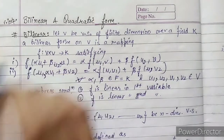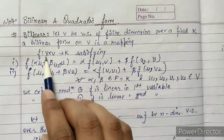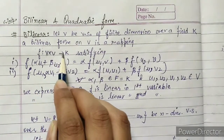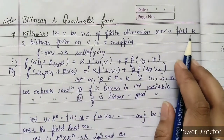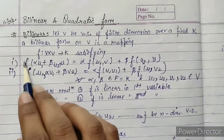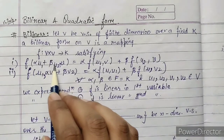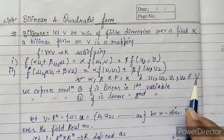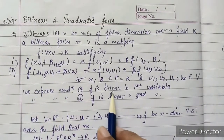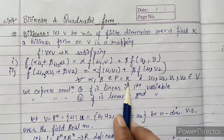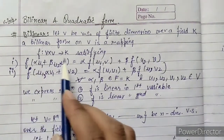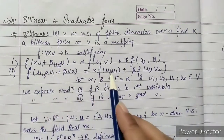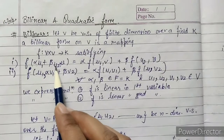Bi means two — that means on the domain side you will get two vector spaces, i.e., the function f: V × V → K, where K is a field. The two conditions are: f(αu₁ + βu₂, v) where u₁, u₂, v₁, v₂ all belong to V, and α and β are scalars from the field. We find that f equals α·f(u₁, v) + β·f(u₂, v).